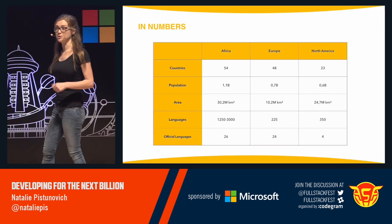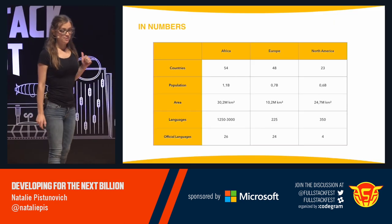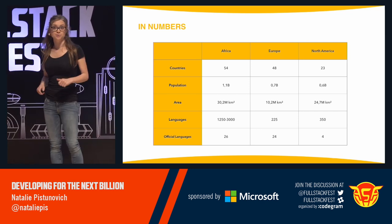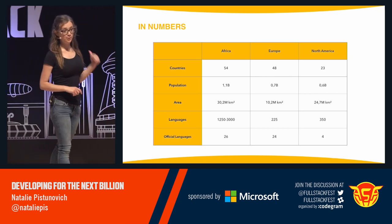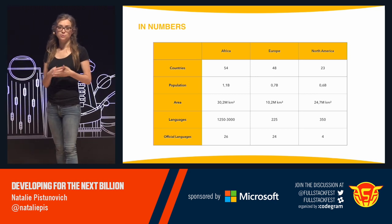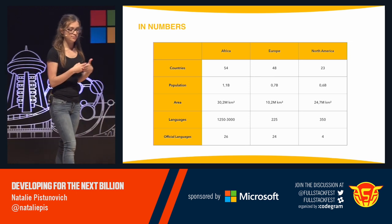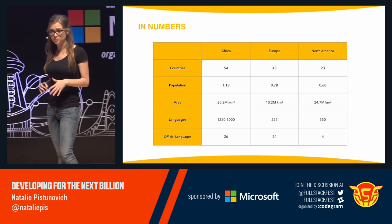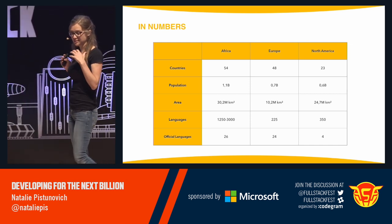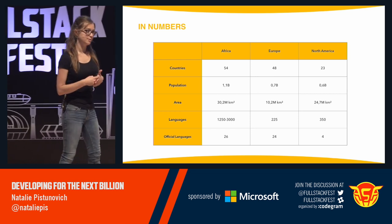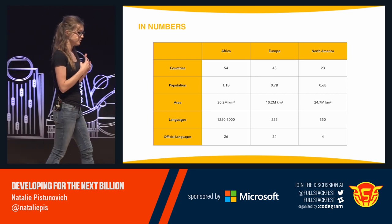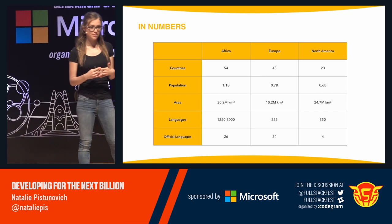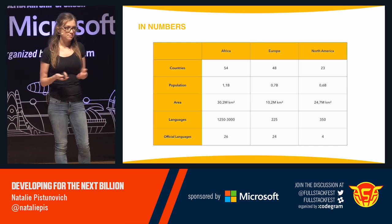Let's talk a bit more about how large Africa is. If you take the area of Europe and North America — which in this case is actually North and Central America according to Wikipedia — and add up both continents, you get slightly more than the area of the African continent. And if you take the number of people living in North and Central America and add those living in Europe, you get only slightly more than the number of people who live in Africa. That's a lot.